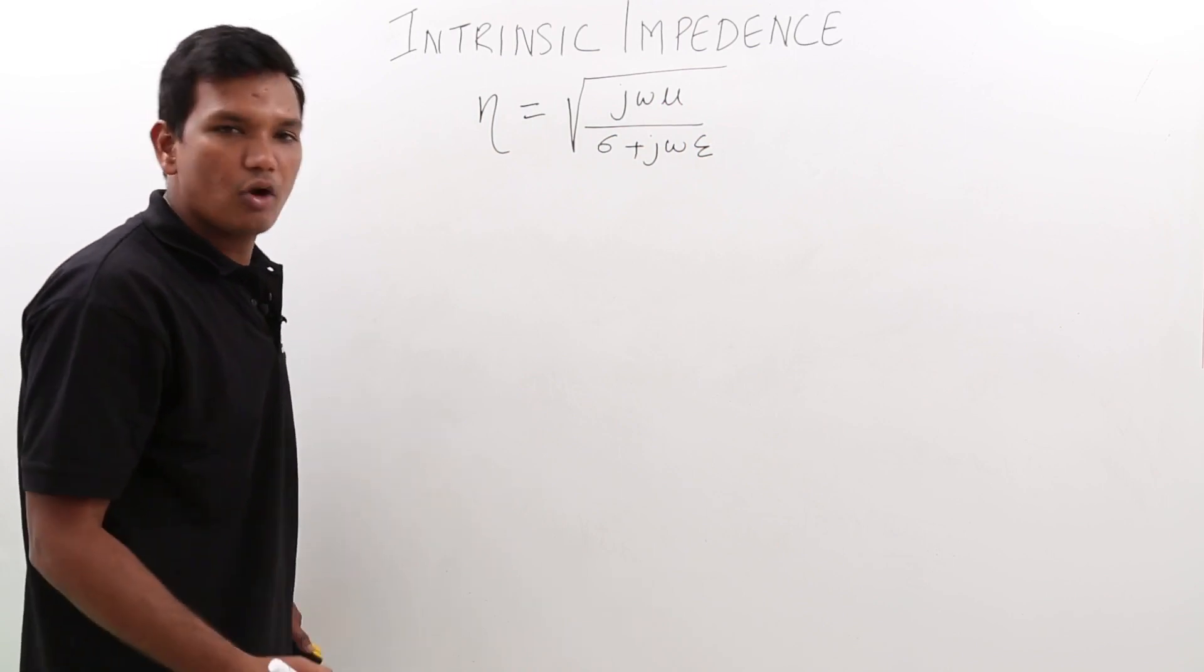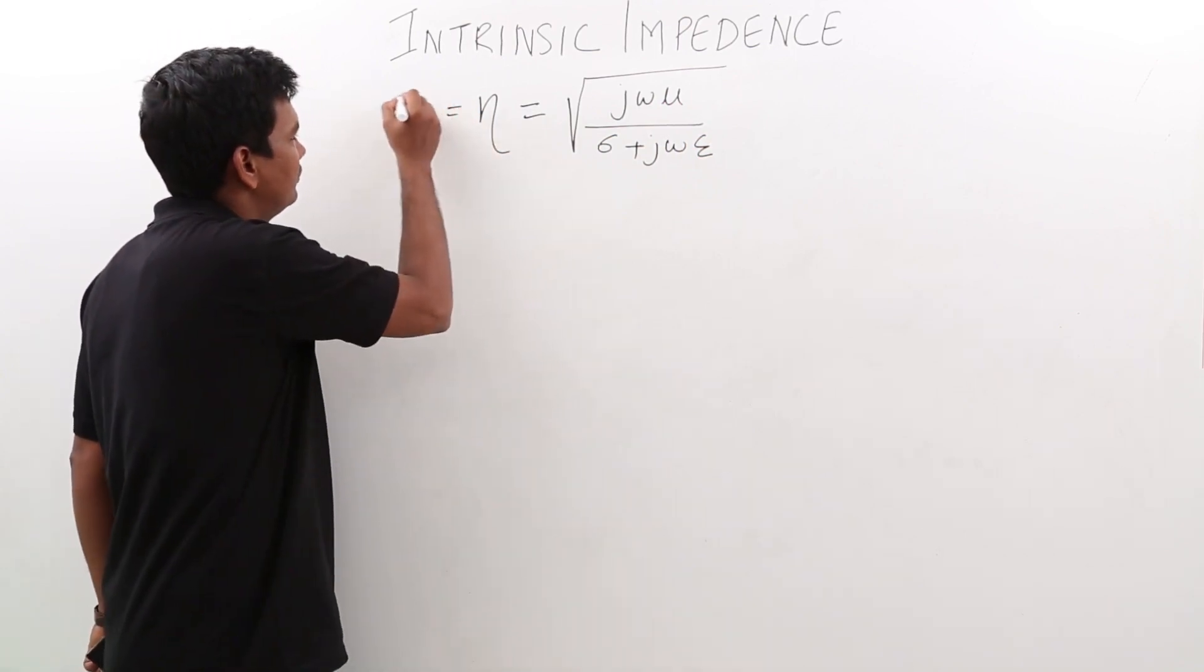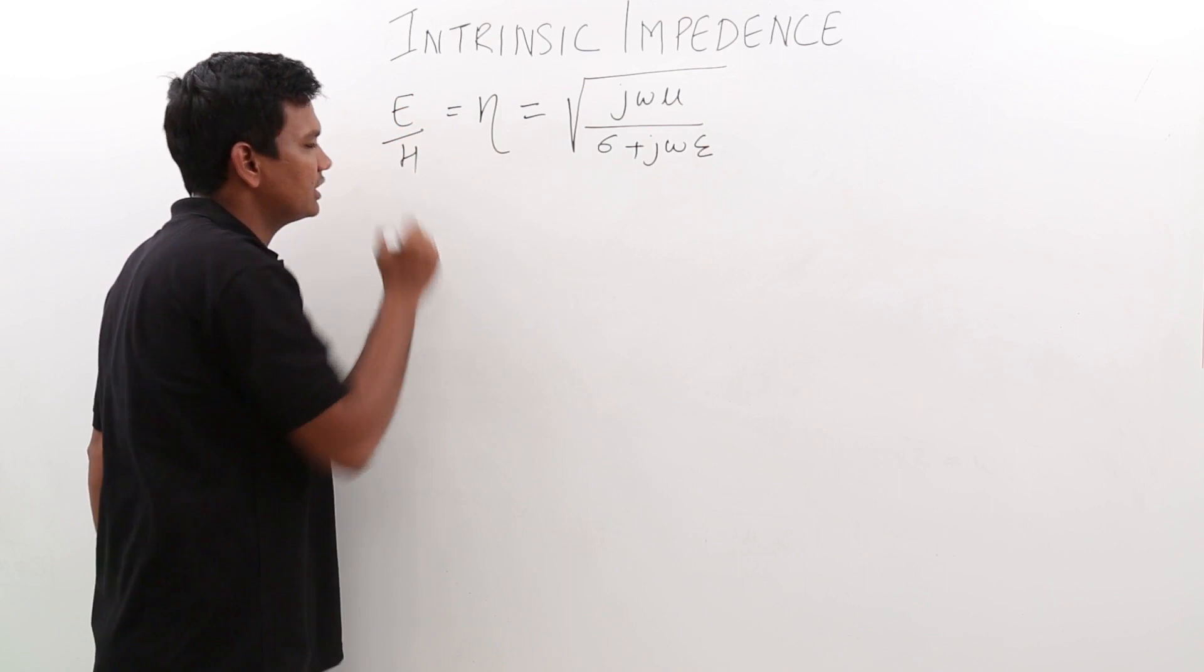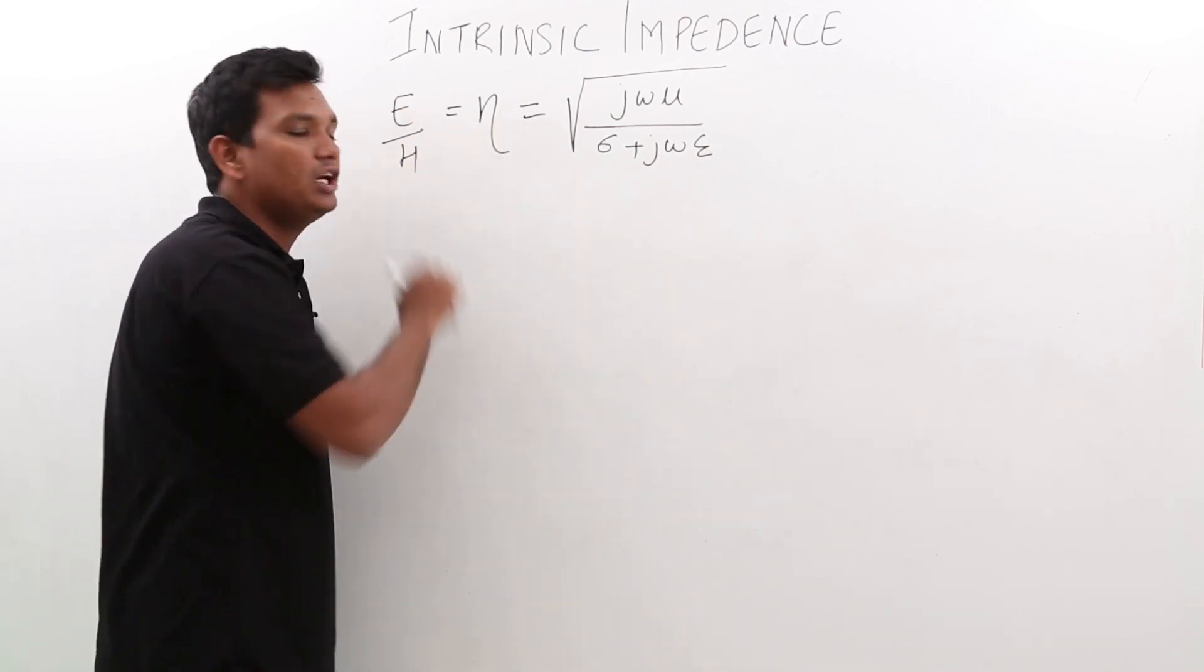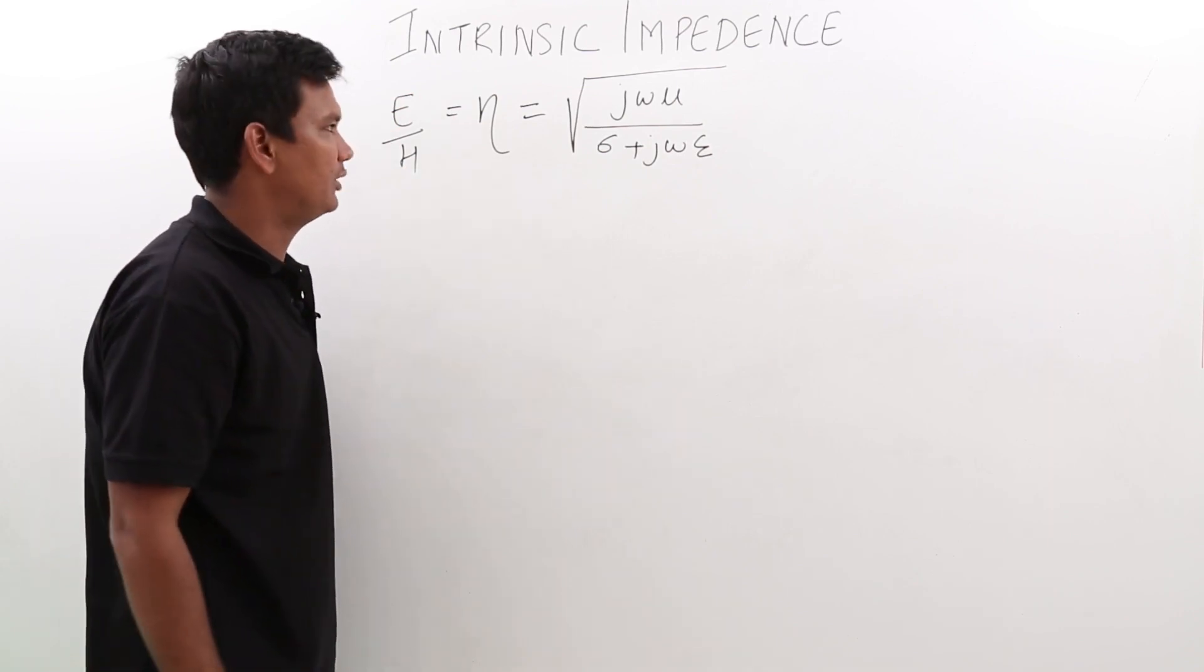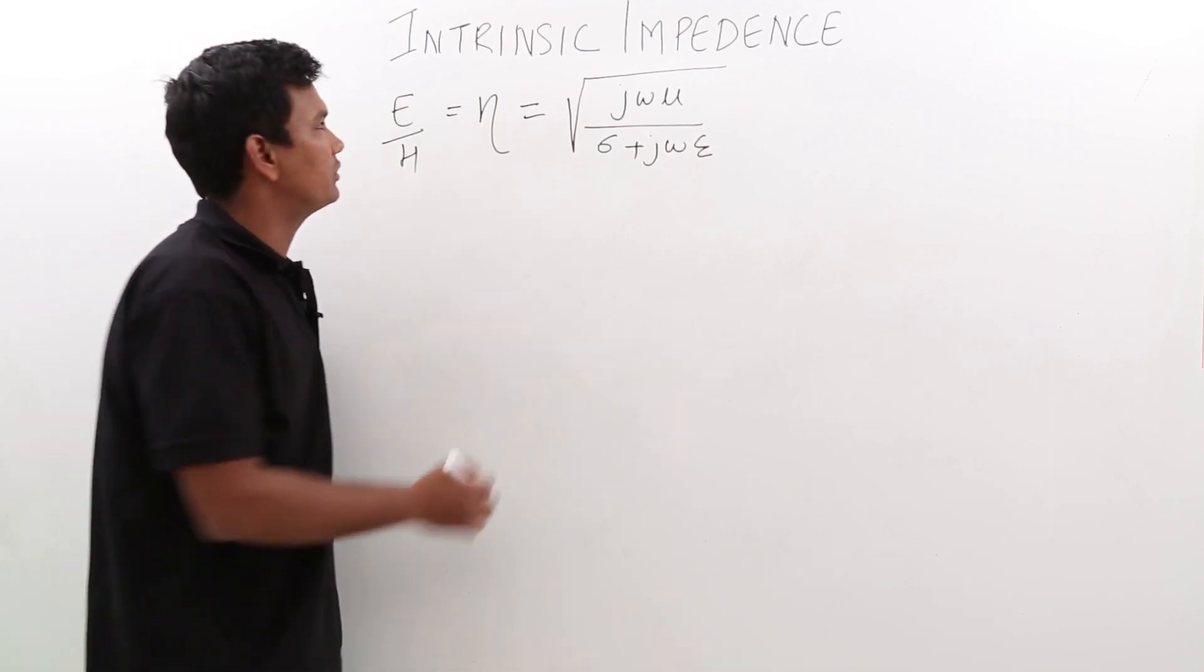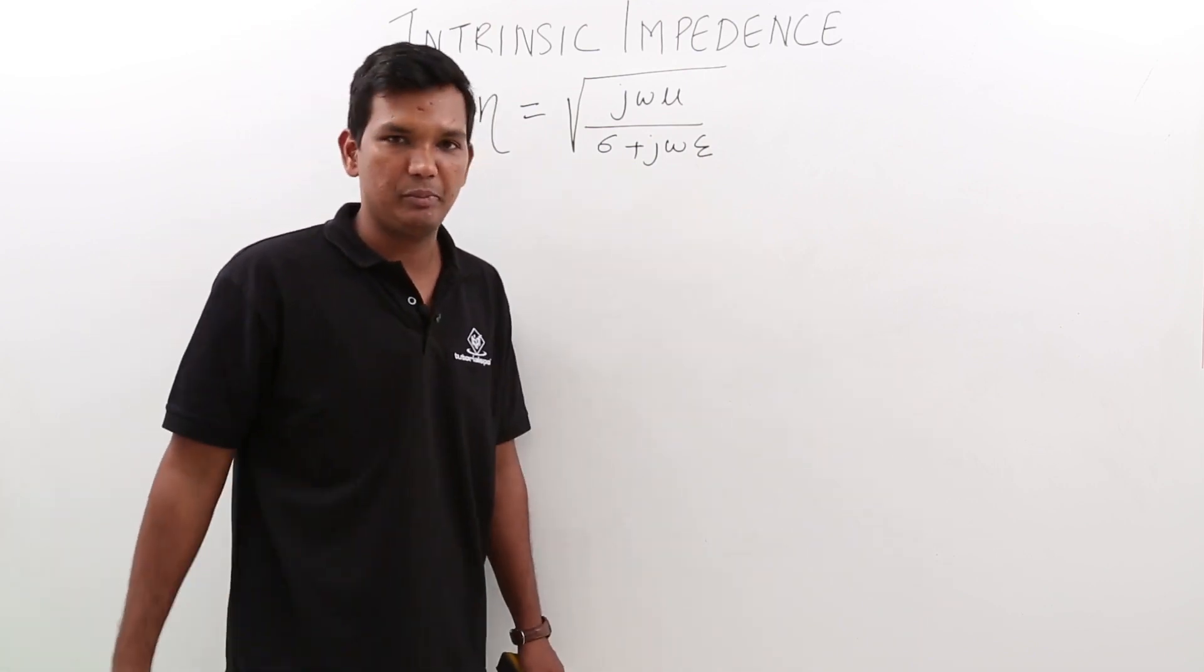This is also equal to E by H, which means intrinsic impedance equals the ratio of electric field to magnetic field. Now, let us find the intrinsic impedance in case of different mediums.